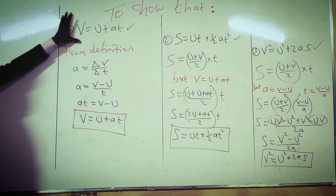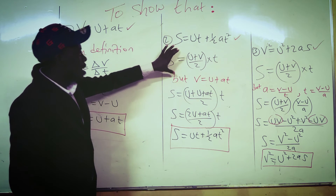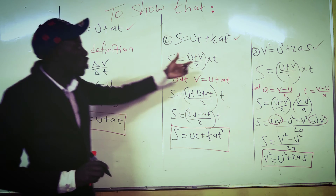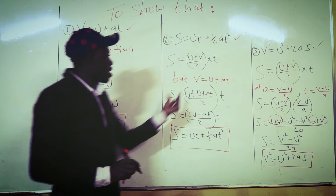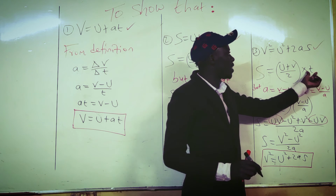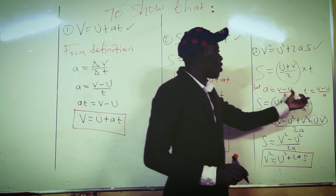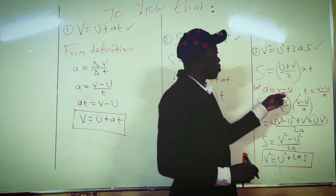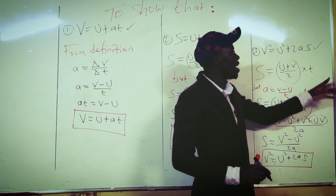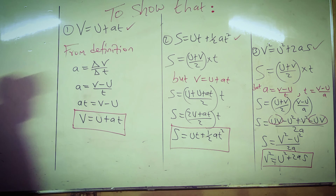To summarize: for the first equation, we derive it from the definition of acceleration. For the second equation, since distance equals average velocity times time for an accelerating body, we replace V with U plus AT. For the third equation, we replace T — since acceleration equals V minus U over T, we make T the subject as V minus U over A, then apply algebraic skills to get the three equations.